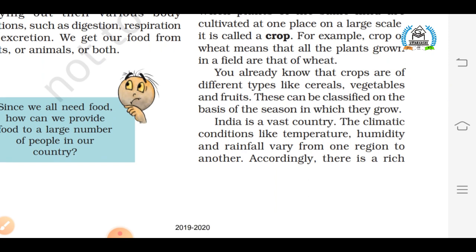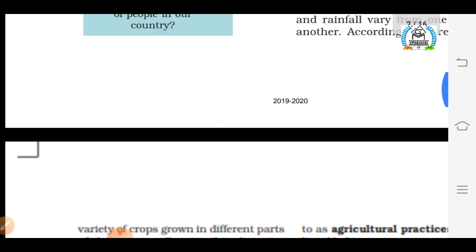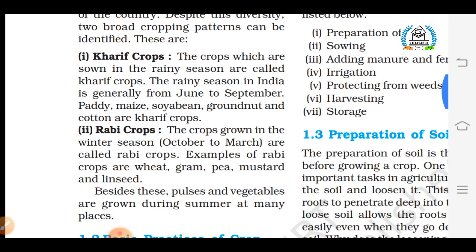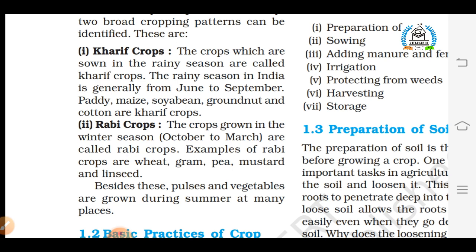As you know, India is a vast country and a land of diversity, so climatic conditions like temperature, humidity, and rainfall vary from one region to another. On that basis, crops are divided into basically two categories with reference to India: Kharif crops and Rabi crops. Kharif crops are basically sown in the rainy season because these crops require a lot of water. They are sown during June or July and harvested during September and October.